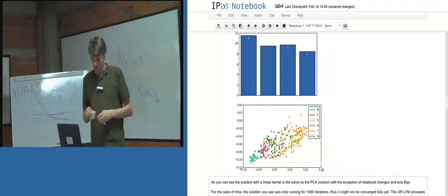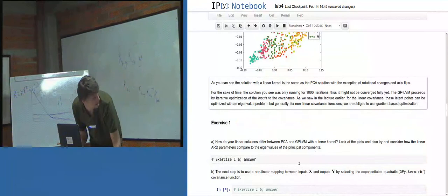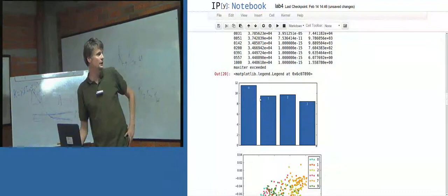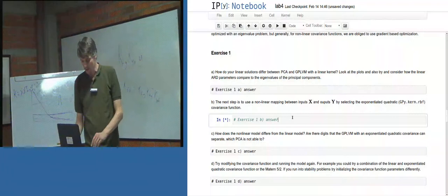So the next thing to do is: how does your linear solution differ between PCA and GPLVM? Look at the plots. Also try to consider how the linear ARD parameters compare to the eigenvalues of the principal components. So compare these two things—compare the ARD values, compare the plots.